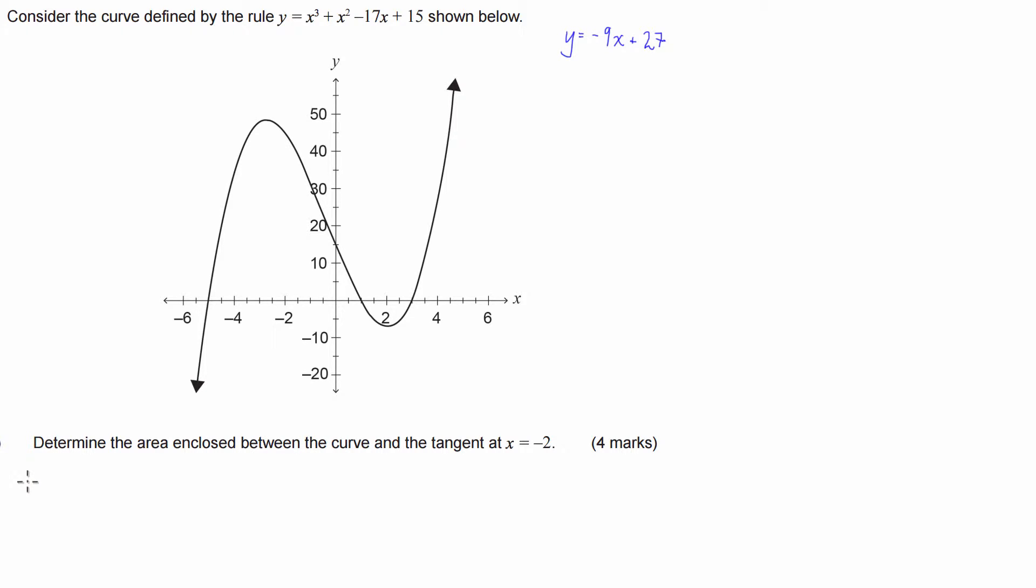We're going to have the equation we're given at the top, x cubed plus x squared minus 17x plus 15, equal to negative 9x plus 27. In an exam, you're going to put this into a graphical calculator or a calculator with a solving facility and just hit solve for x. What's going to come out is x equals negative 2 and x equals 3.